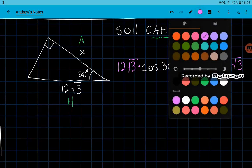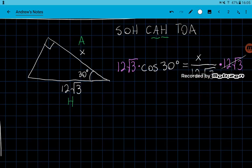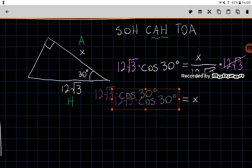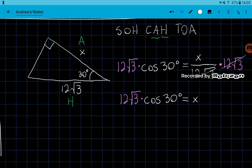And that's it. We now have the 12 square root of 3, it cancels with this 12 square root of 3. And we have that X is equal to 12 square root of 3 times the cosine of 30 degrees. And that is pretty much it. I hope that helps.